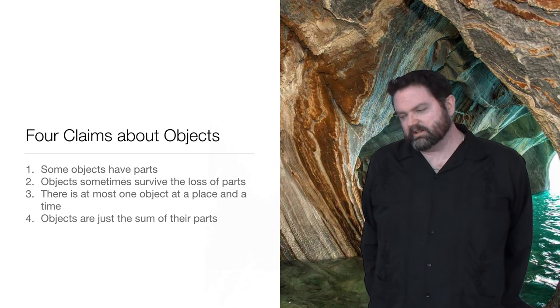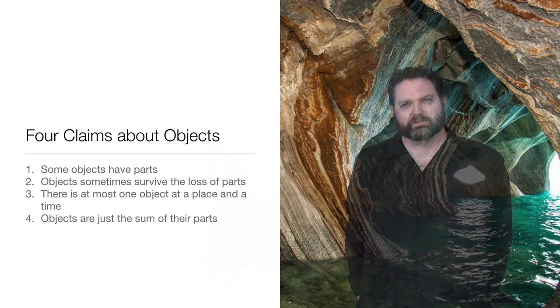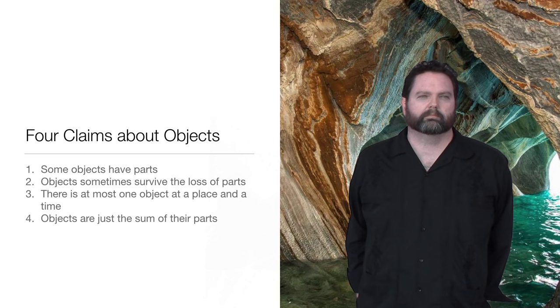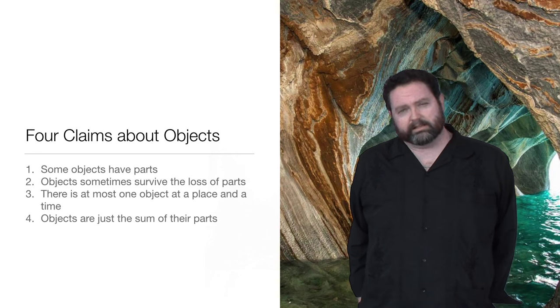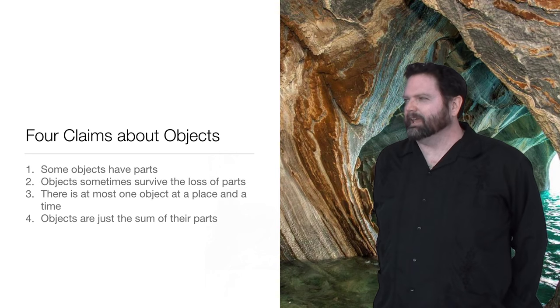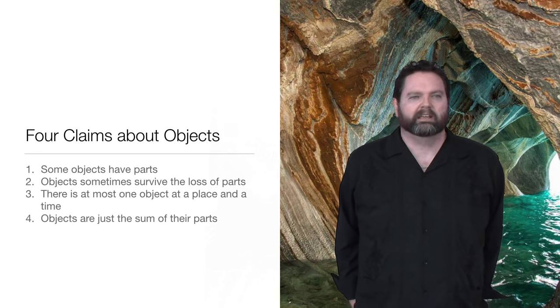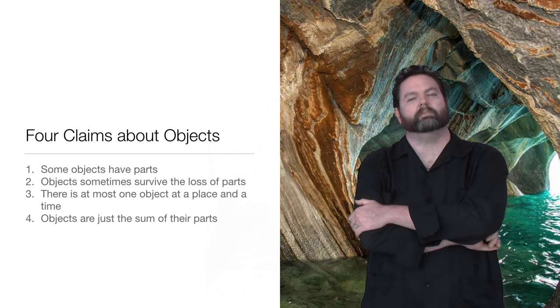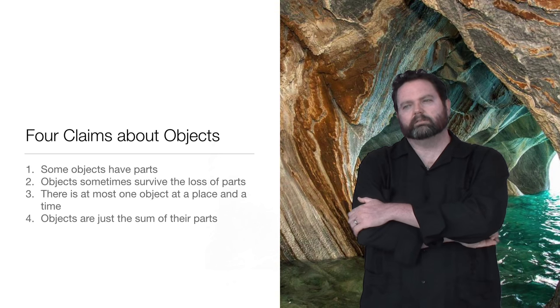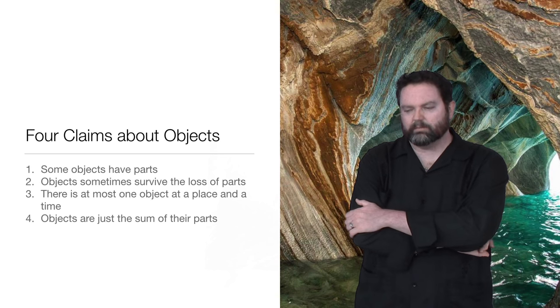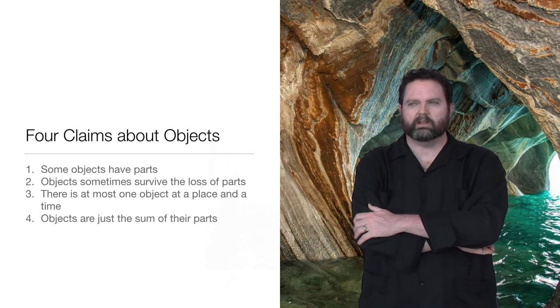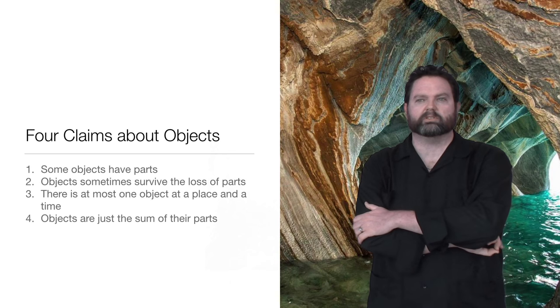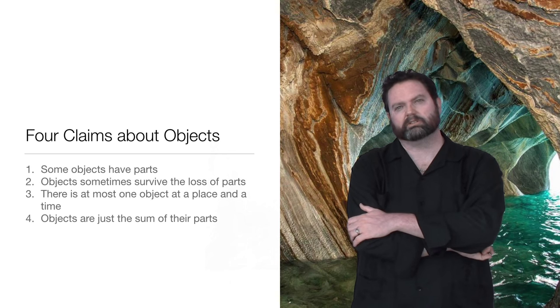So we got that objects have parts, at least some objects have parts. Objects survive the loss or replacement of parts. The third claim is that more than one object cannot occupy the same place at the same time. So I'm standing here, but there's no chair here at the same place at the same time. I can't walk into and occupy the same space as the camera. We think that objects occupy at most one place at a time.